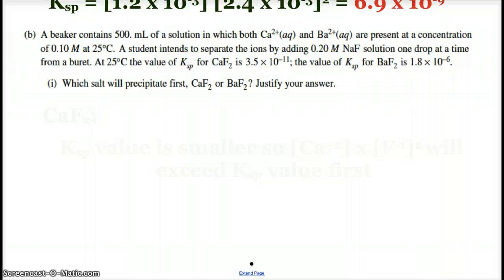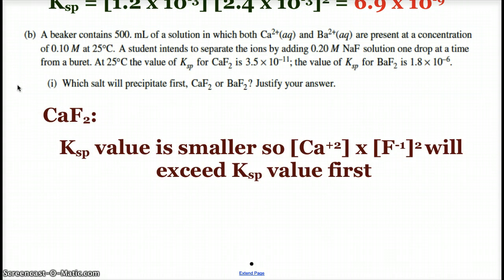All right, so again, we've got our solution with calcium and barium ions. And we're going to add sodium fluoride, a.k.a. adding fluoride ions. And one of those solids are going to precipitate first. And so hopefully you recognize that it's going to be the calcium fluoride. That Ksp value is so much more small. And what that means is, the concentration of calcium times the fluoride squared, that's going to be exceeded first. All right, and again, we know our calcium and barium ions are at the same concentration. And so whichever one, when you multiply the fluoride ion squared, you're going to get to that Ksp value first. And that makes sense. Calcium fluoride is much less soluble than barium fluoride, as you can see by the Ksp values. So it's going to precipitate out first.